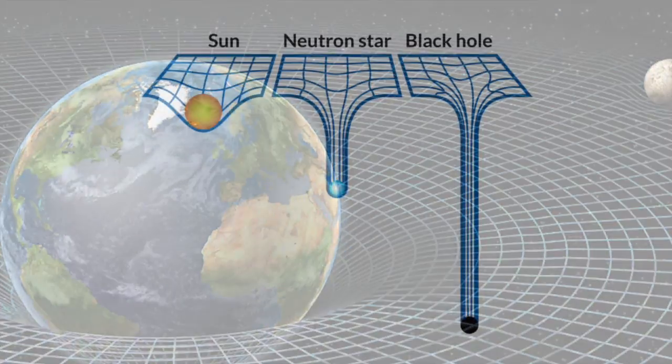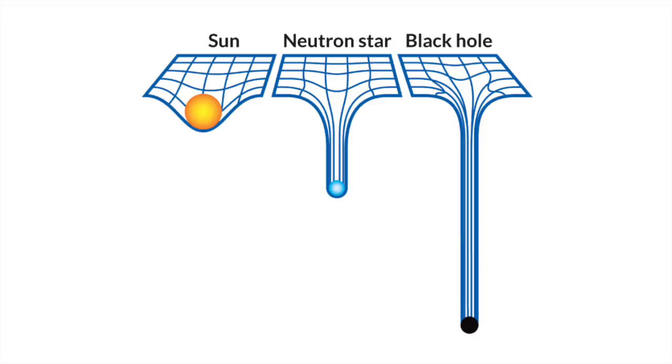If an object is more massive, it therefore pushes down, metaphorically, on the spacetime, curving it even more. As an object becomes more massive, it seems to warp space and time itself, making spacetime more curved.